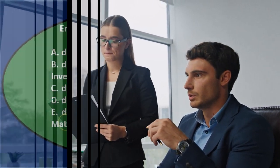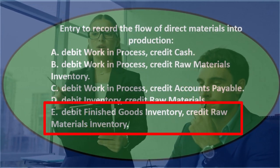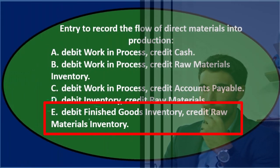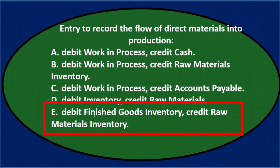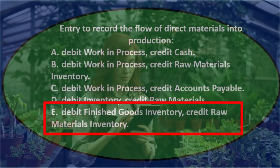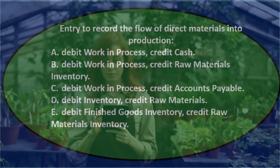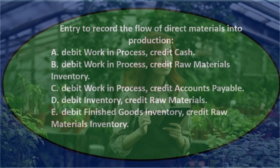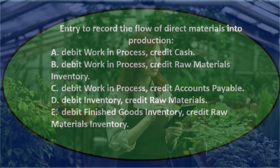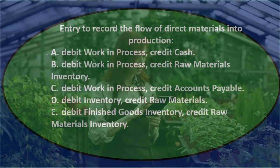And E says debit finished goods inventory and credit raw materials inventory. We're not going to debit finished goods inventory because we're just putting the goods into production — they're not finished yet because we haven't finished them yet. So it's not going to be those two. We're down to A, B, and C.